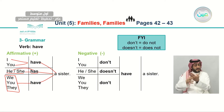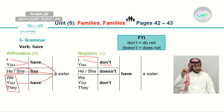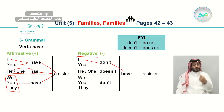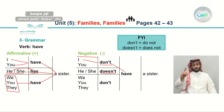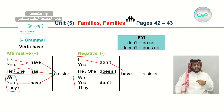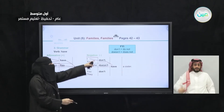Now, if I want to make the negative form of the verb 'have,' what should I do? I don't have a sister. You don't have a sister. 'Don't' comes with I and you for singular, and sometimes you for plural. He and she come with 'doesn't' to make 'have' negative: he doesn't have a sister, she doesn't have a sister. With we, you, and they, we use 'don't have.' For your information, 'don't' is the abbreviation for 'do not,' and 'doesn't' is the short form of 'does not.'